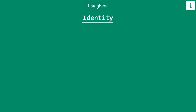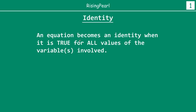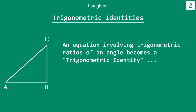Now what is an identity? Before we talk about trigonometric identity, what is an identity? An equation becomes an identity when it is true for all values of the variables which are involved. So any equation becomes an identity when the equation is true for all values. It's important to understand that the equation becomes true for all values of the variable involved. Then we say it is an identity.